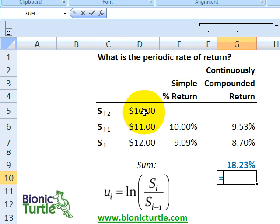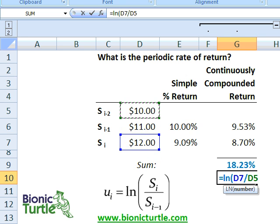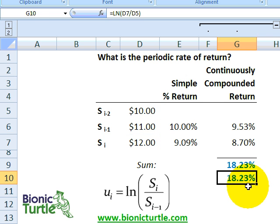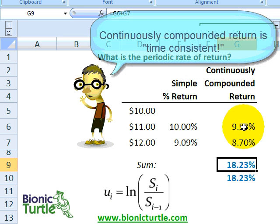Now, what if I just do a direct, continuously compounded return from $10 growing to $12? That's the two-day period. Well, natural log, I open the parentheses. It's $12 divided by, and I'm going back two days now, directly. I close the parens. Look at this. The continuously compounded return over two days equaled the sum of the one-day continuously compounded period.